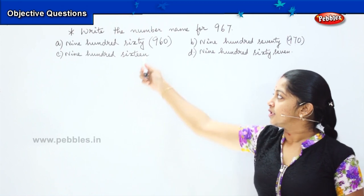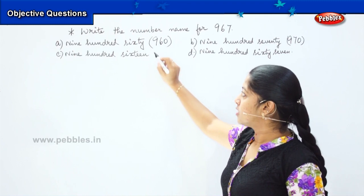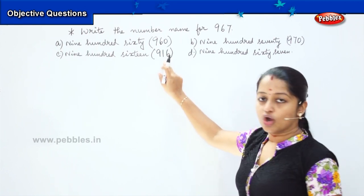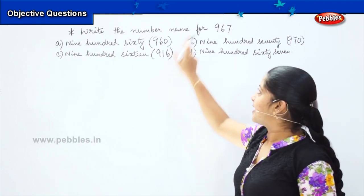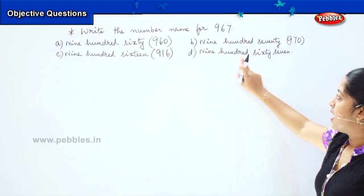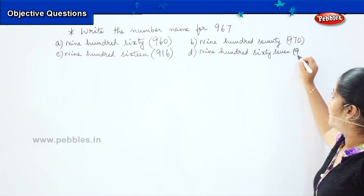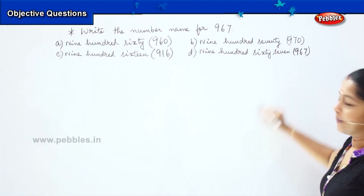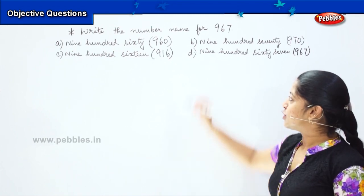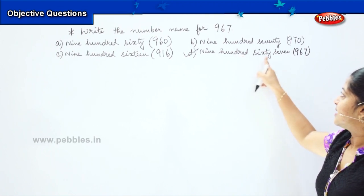The third option says 916. When it is 916, how will you write it? You will write it as 916, and this option also does not match the question. Coming to the next option, 967 — how will you write it? 967. Is it matching with the question? Yes.